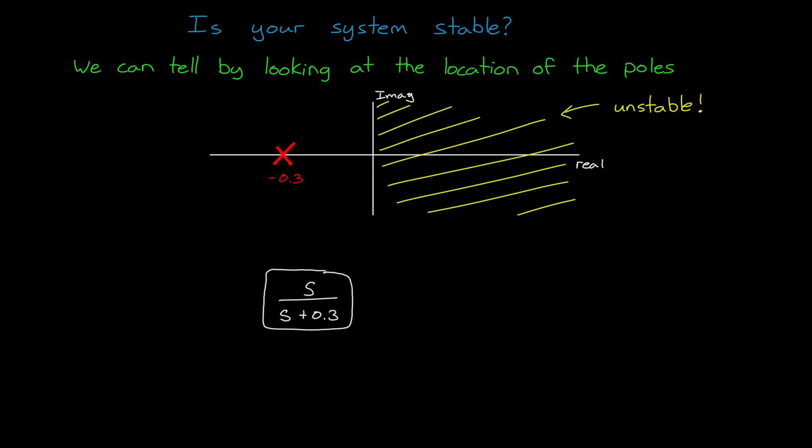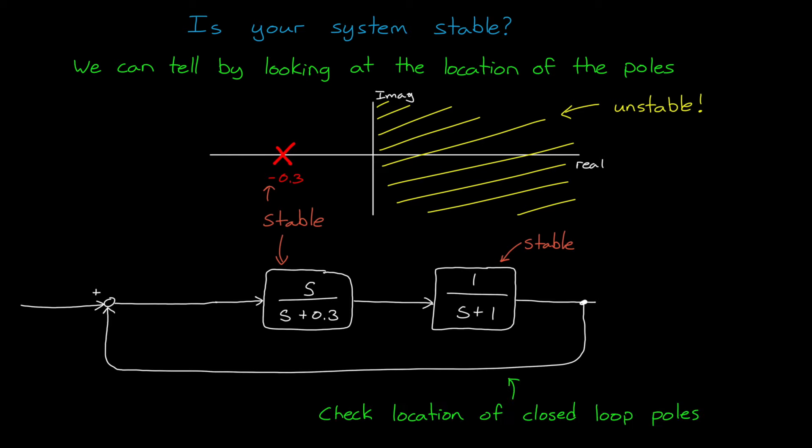And this becomes really powerful when we have transfer functions in series since we combine them through multiplication. If any transfer function is unstable, then the end-to-end system is unstable. We can also analyze stability in feedback systems by solving for the closed-loop transfer function and checking the location of the poles.